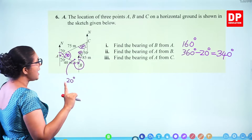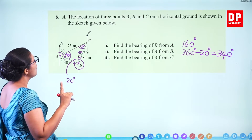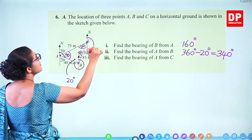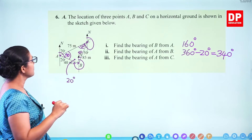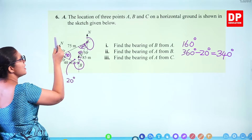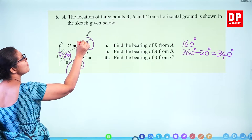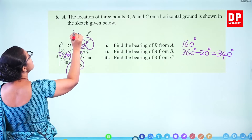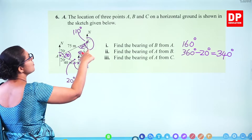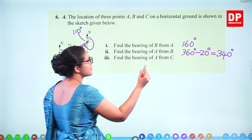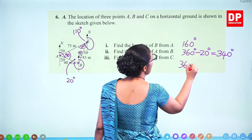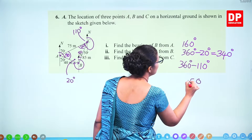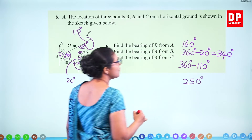Find the bearing of A from C. C is this point, and you need this whole angle. If this angle is 70, then 180 minus 70 equals 110. Straight away you can get this angle: 360 minus 110 equals 250 degrees.